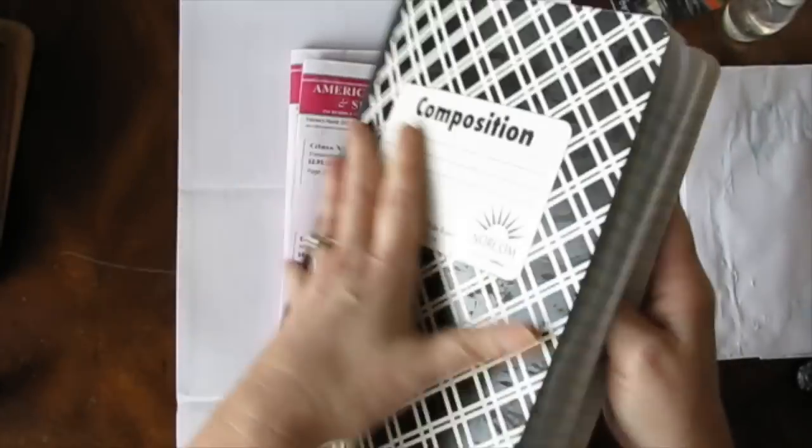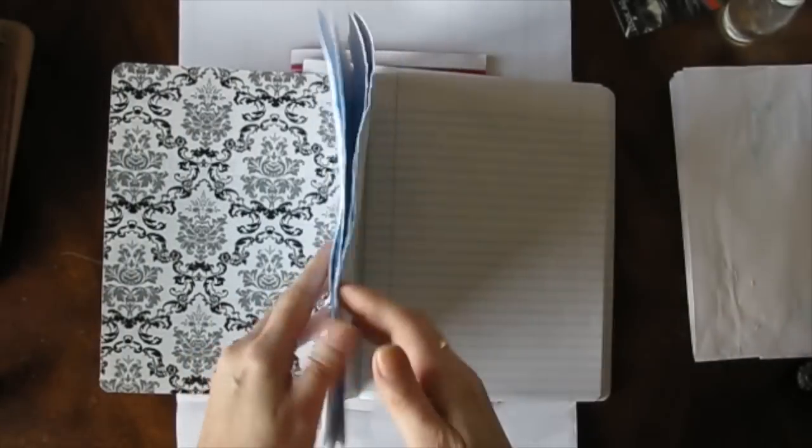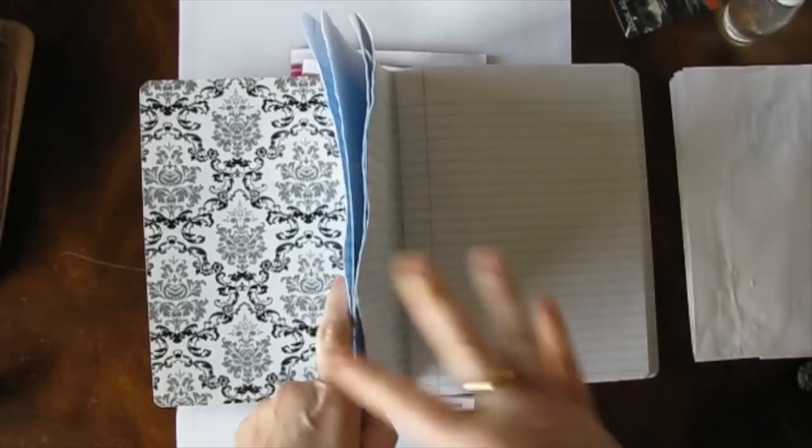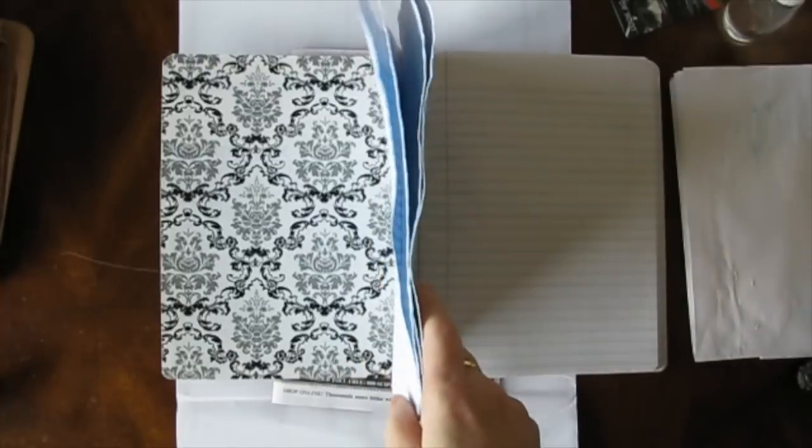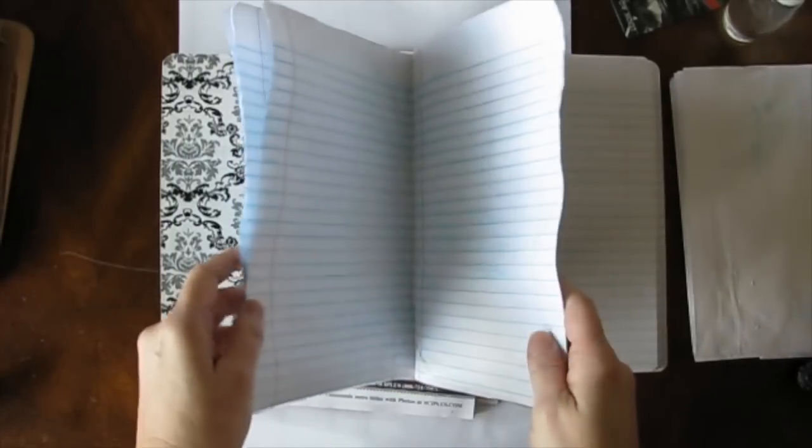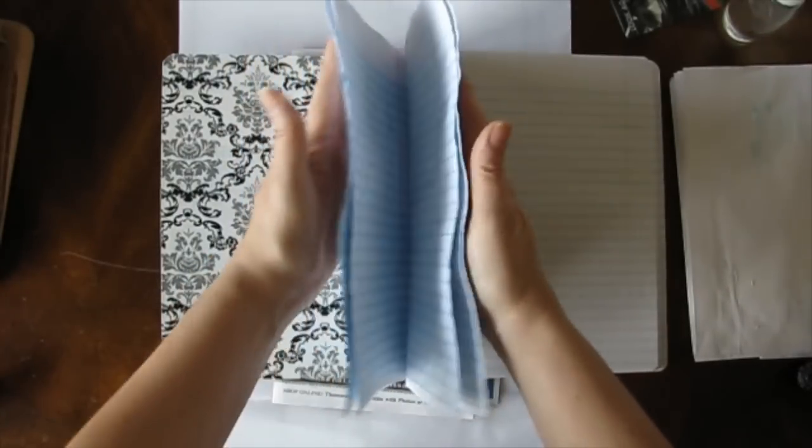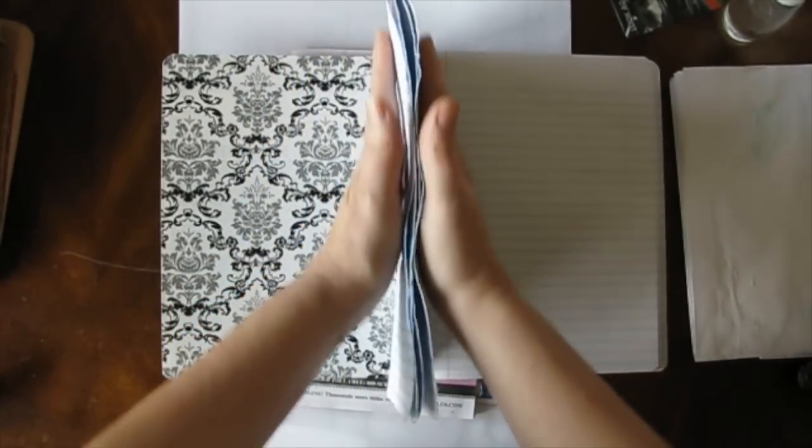And then when you start adding glue, this just gets worse, this buckling right here. That's just the nature of the beast. And I really kind of hoped that by using the composition book, having it be something that was cheap and easy to come by, I kind of hoped that you would make peace with the buckling.